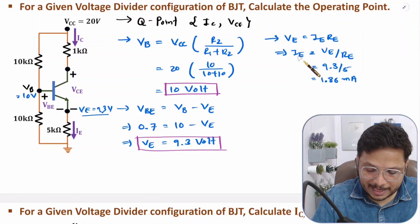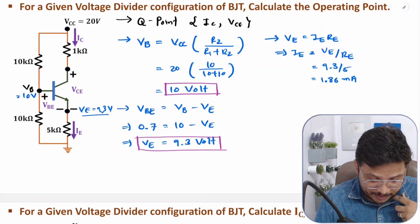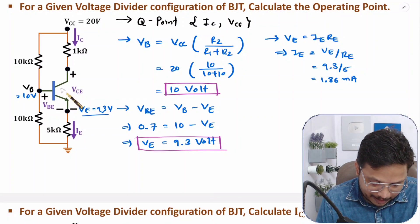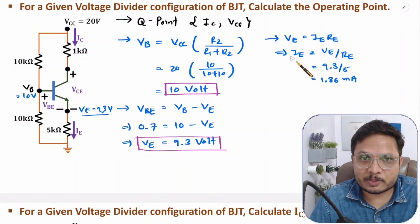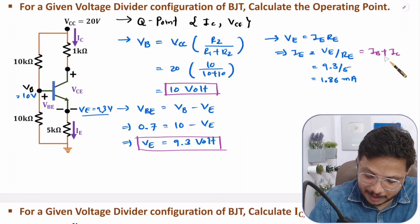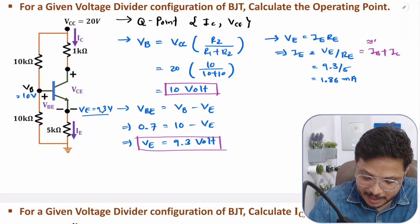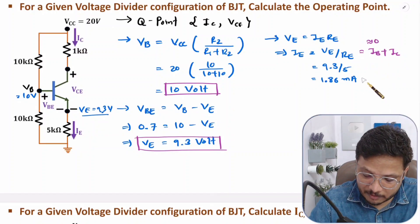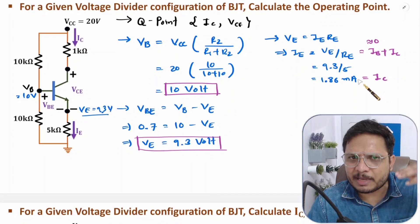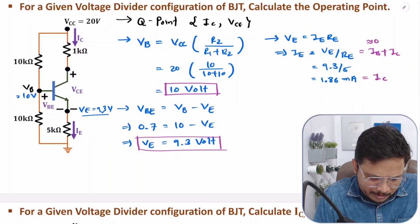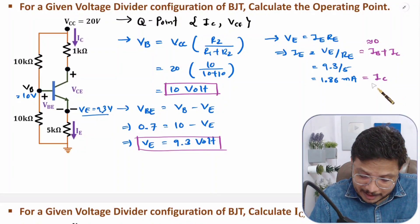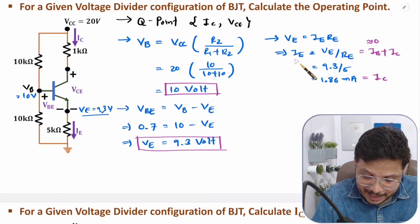We have IE current. Now, we don't have transistor data like beta. If no other data is given, IE equals IB plus IC. But since beta is very high, IB is negligible, so we can say IE is approximately equal to IC. Therefore IC is approximately 1.86 milliamps.